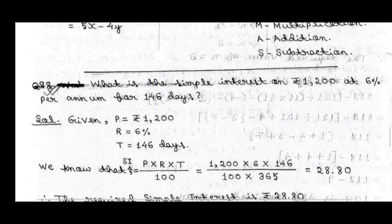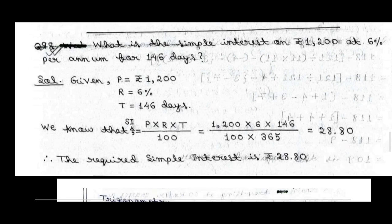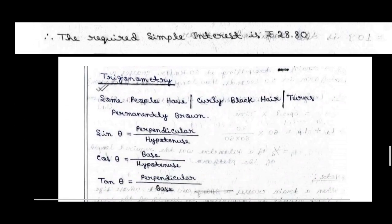Next question: what is the simple interest on Rs. 1,200 at 6% per annum for 146 days? Simple interest equals principal multiplied by rate multiplied by time, divided by 100. Principal is 1,200, rate is 6, time is 146 days out of 365. The required simple interest is Rs. 28.80.